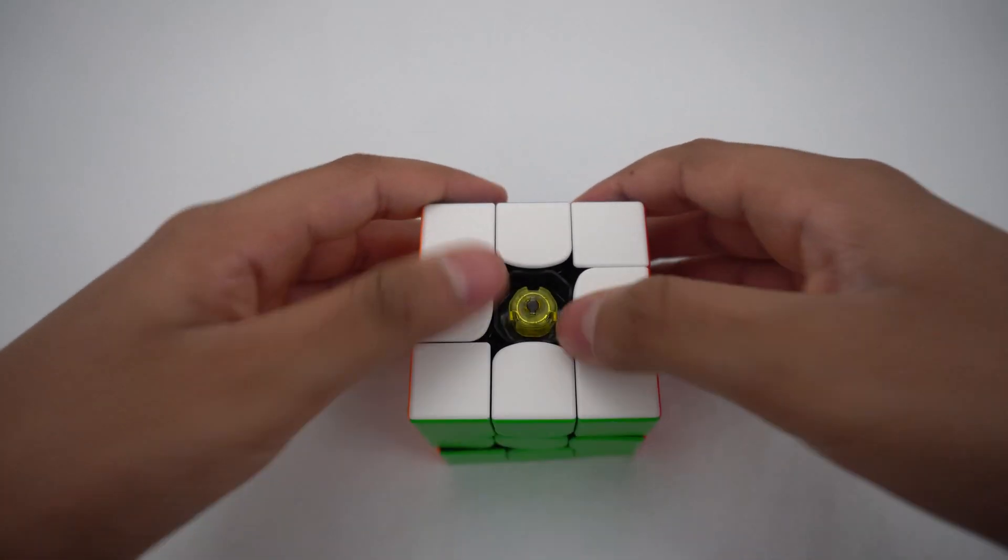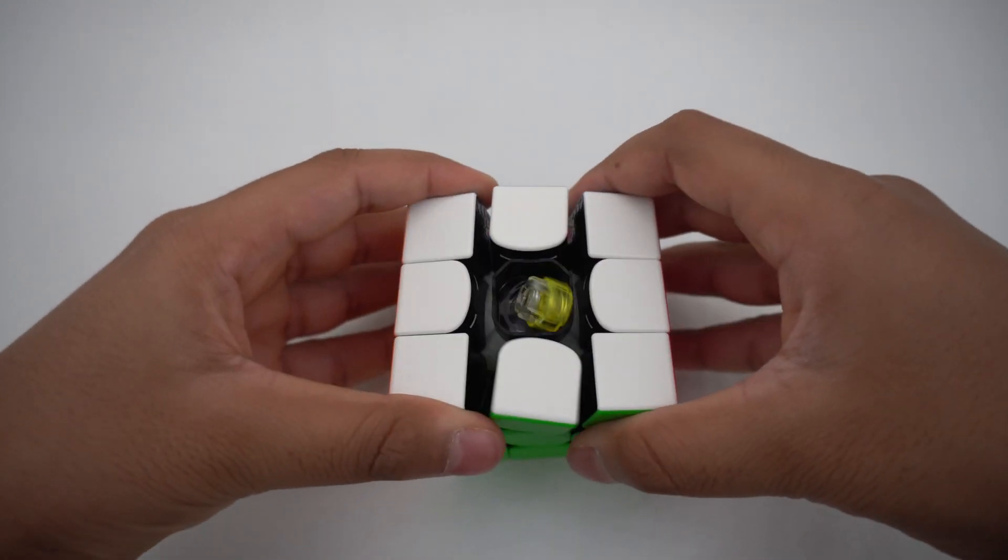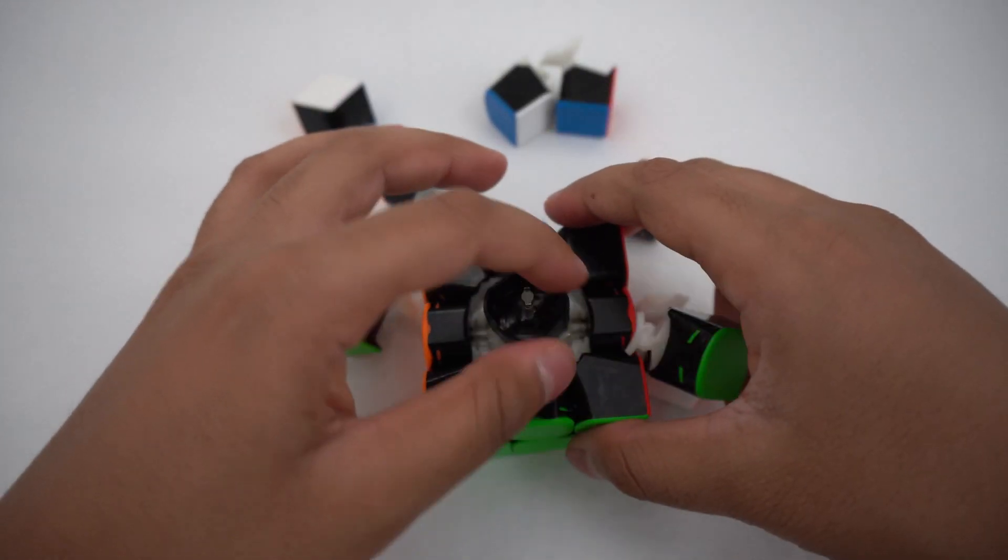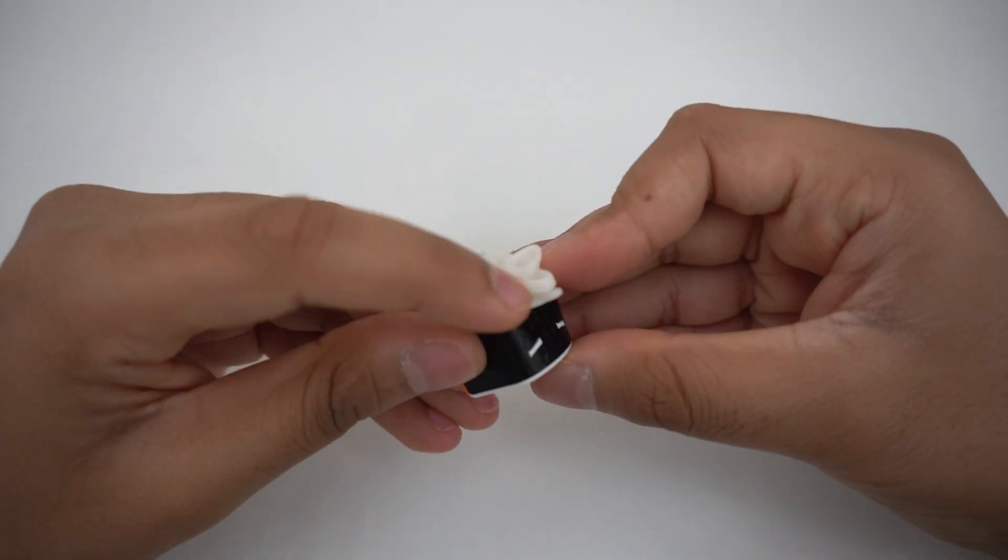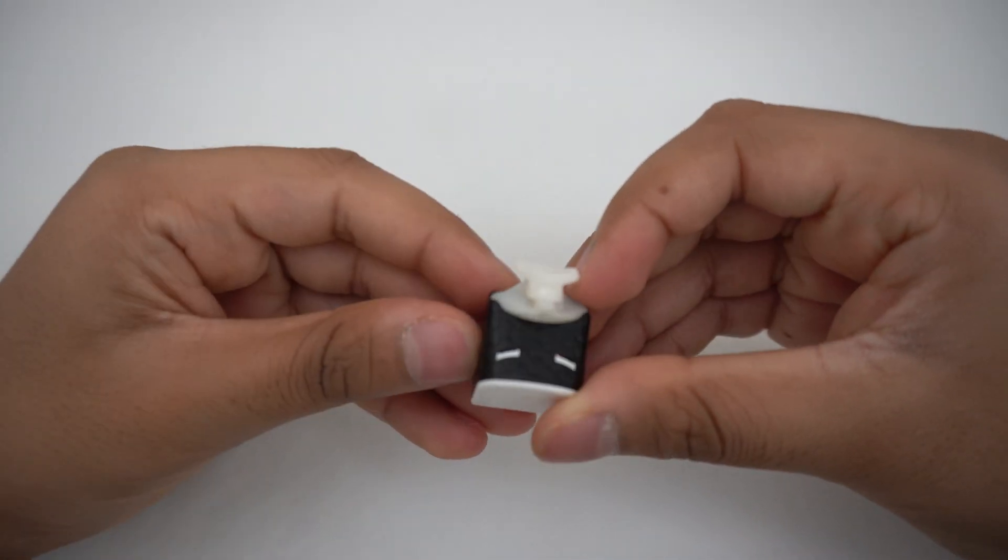The second way to do this is by first popping off the cap with the cube logo and then loosening the spring so the cube will become unstable and fall apart. After opening the cube, you can see each type of piece has different connecting parts.